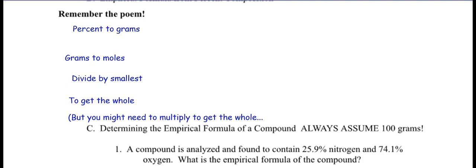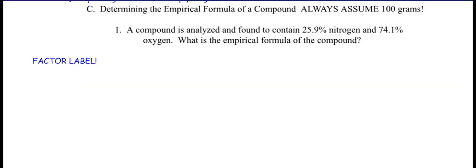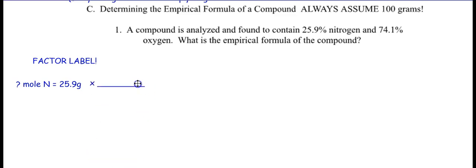Let's look at an example: a compound contains 25.9% nitrogen and 74.1% oxygen. What is the empirical formula? Always use factor labels. So moles of nitrogen: start with 25.9 grams of nitrogen — that's 25.9% of 100 grams. Put grams on the bottom and use nitrogen's molar mass from the periodic table, which is 14.1 grams per mole. Divide to find moles of nitrogen.